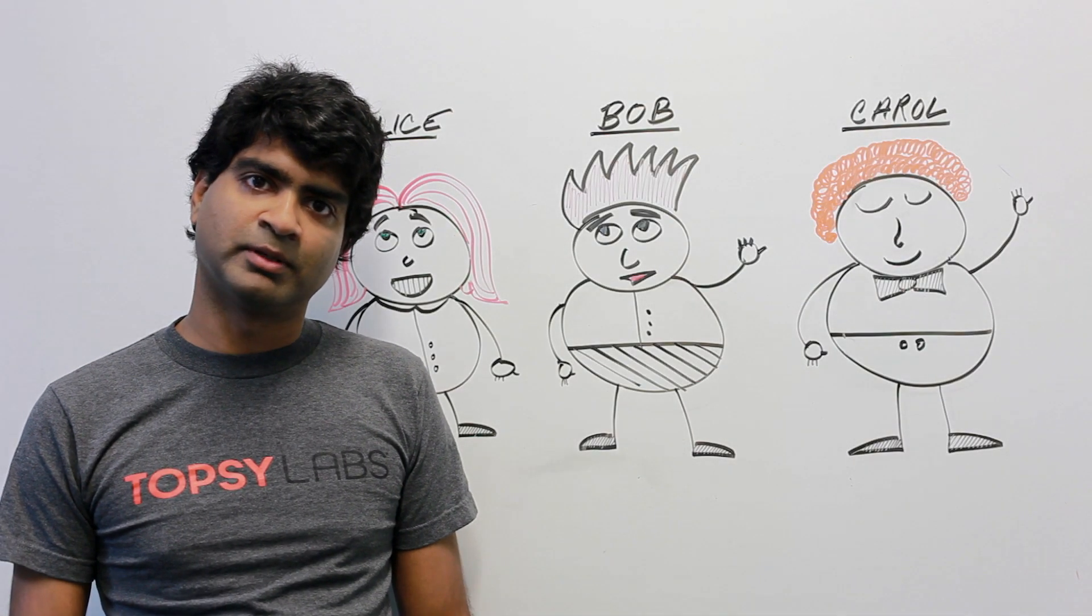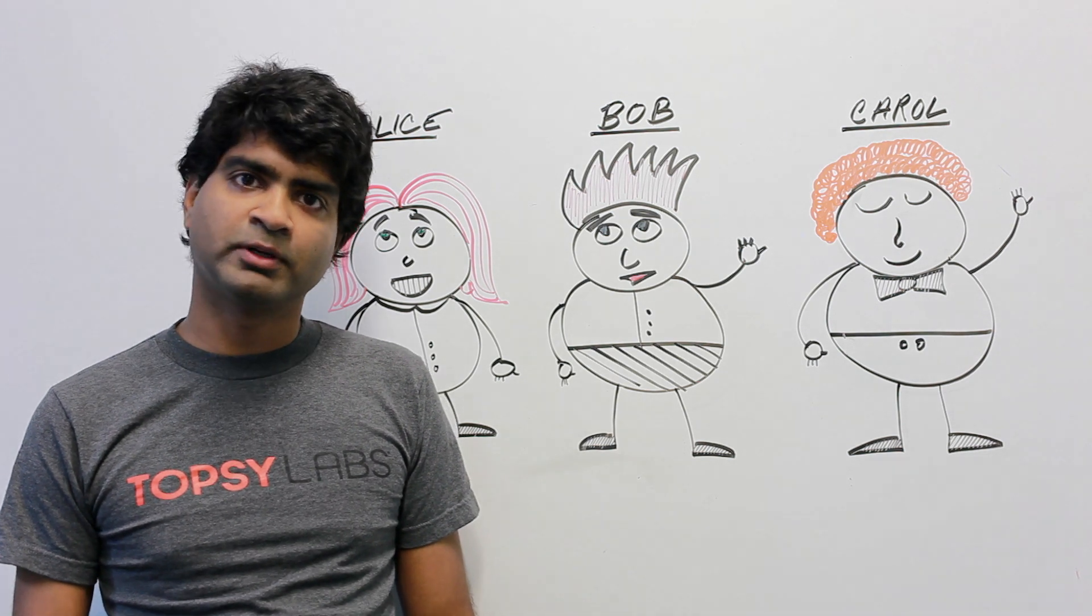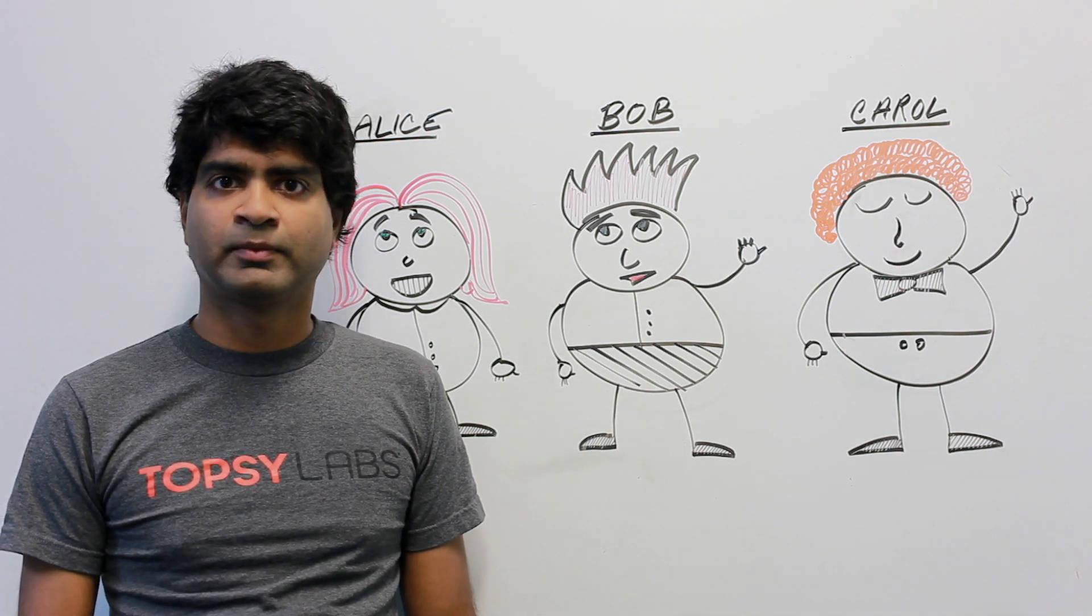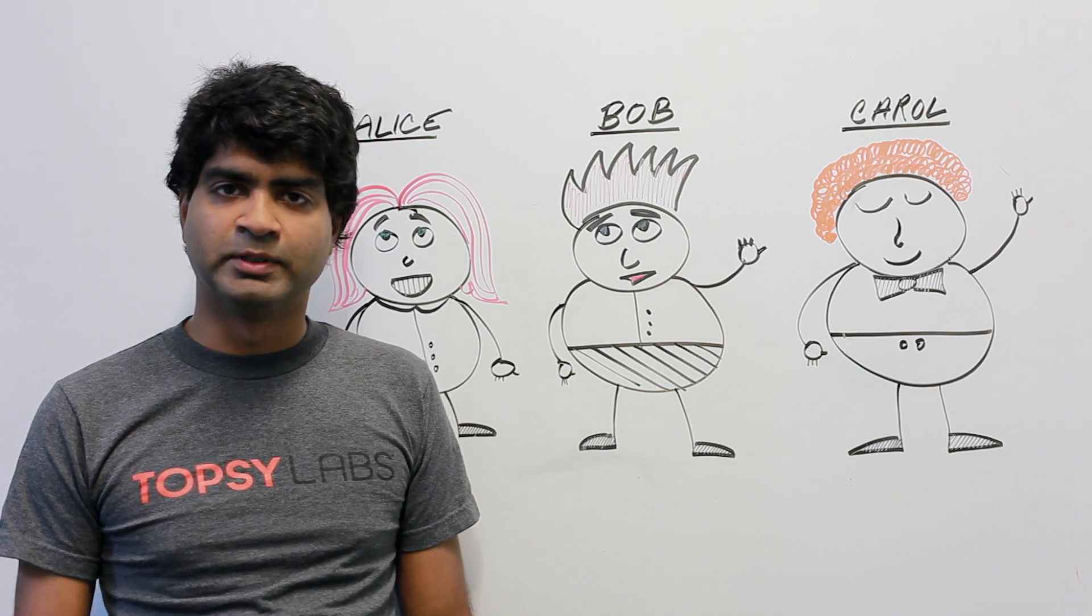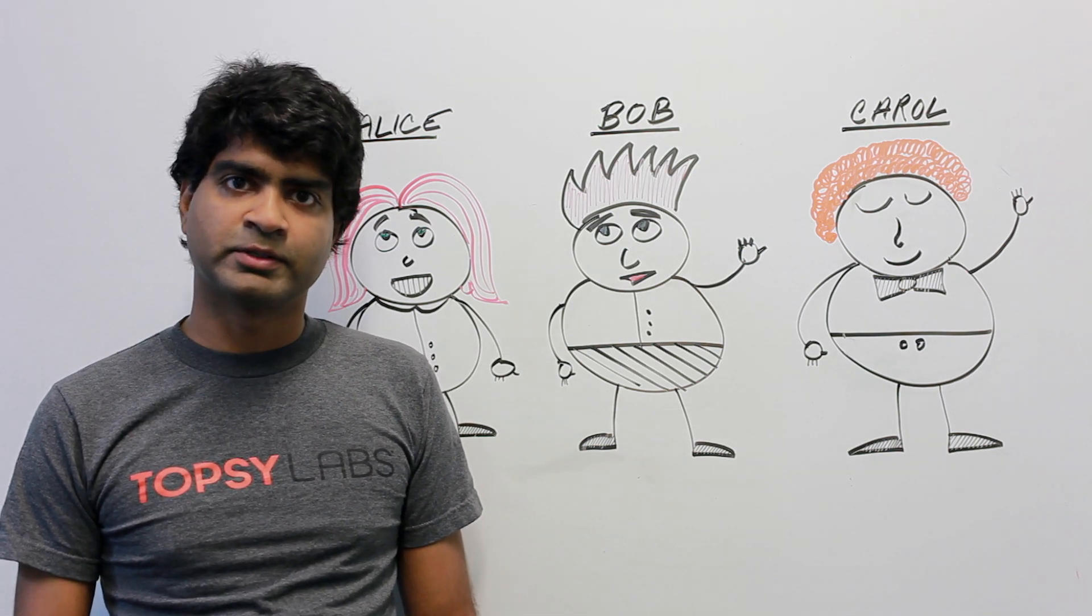This may be a small example, but at Topsy we get the full Twitter Firehose. That's over 400 billion posts a day. By analyzing all the interactions on Twitter, we're able to compute Alice's influence and the influence of all the users on Twitter.